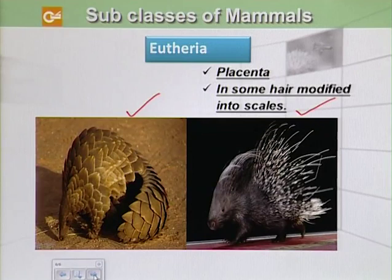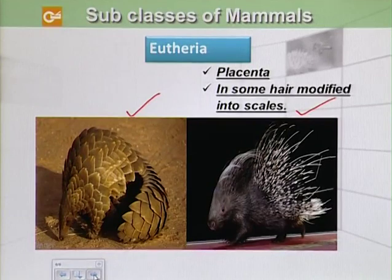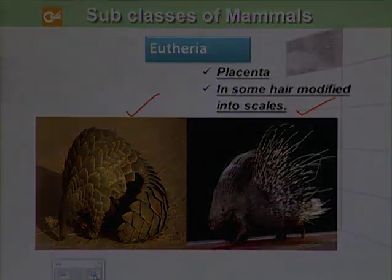In some, hairs are modified into spines, for example the porcupine. Examples of Eutheria include man, whale, elephant, horse, and rat or mice.